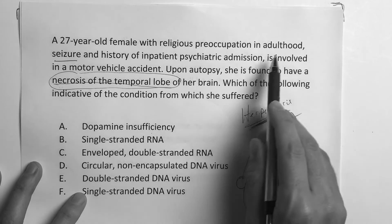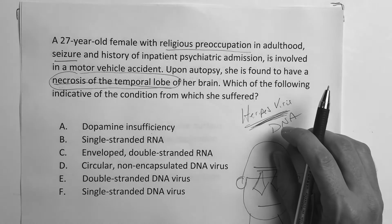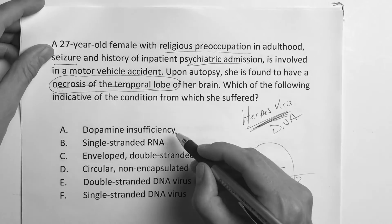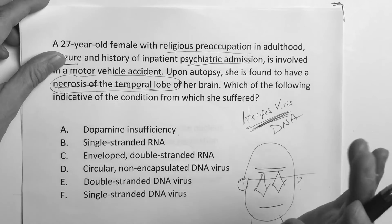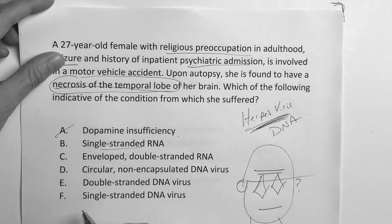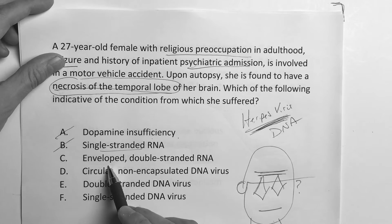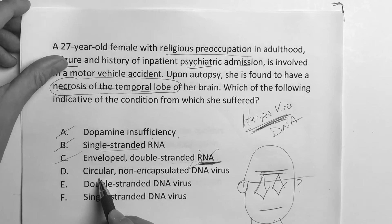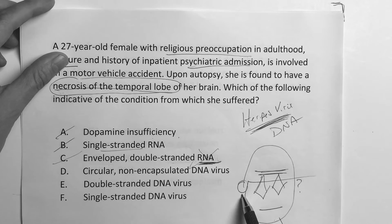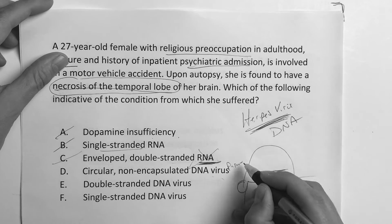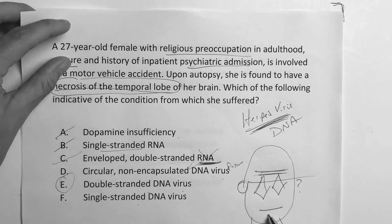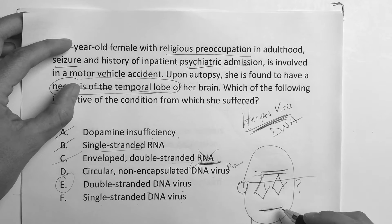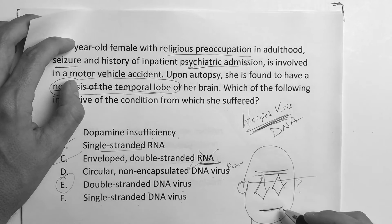Is her condition due to dopamine insufficiency? No. She may have religious preoccupation and psychiatric admission — you may think psychosis — but when people are psychotic it's not a dopamine insufficiency, it's a dopamine surplus. So it's definitely not A. Herpes is not single-stranded — it's double-stranded, so it's not that one. Is it enveloped? Yes. Double-stranded RNA? No — it's DNA, not RNA. Circular? Nope — the popova is circular. Non-encapsulated DNA virus? No, that describes popova. Double-stranded DNA virus? Looks good. Single-stranded? Nope — the only single-stranded is parvo, associated with aplastic anemia, smallest, linear, single-stranded, also associated with fifth disease.